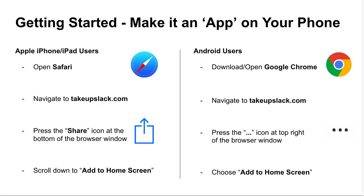For Apple iPhone or iPad users, you'll use the Safari browser and navigate to TakeUpSlack.com. At the top or bottom of your screen you'll see the share icon, which is the square with the arrow pointing out. By pressing on that, you'll scroll down through menu options to add to home screen, and then you'll be able to save the TakeUpSlack app to your phone's home screen and tap on it to log right into the app.